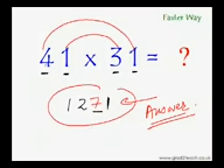Just multiply the first digits to get the first digits of your answer. Leave a blank space, multiply the last digits to get the last digit of your answer.